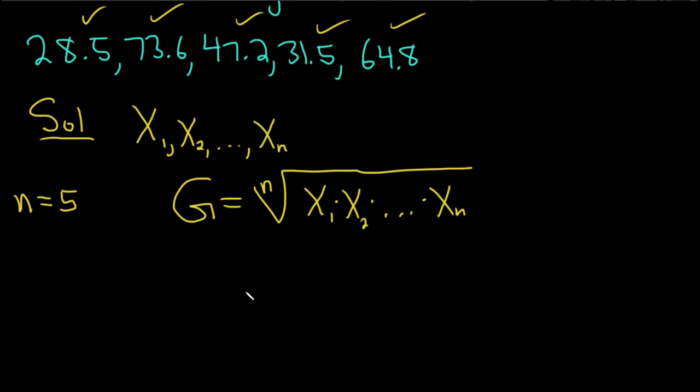Okay, so now we're going to take the fifth root. Fifth root of the product of all of these numbers. So 28.5. I'm just going to put it in parentheses because I don't want to put a times, because there's already a decimal.